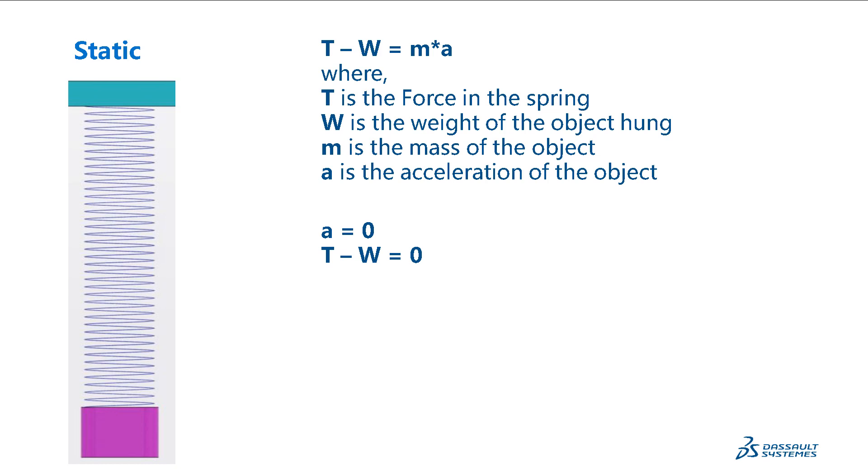When there is no more motion, the acceleration of the object will be zero, and at this point in time, T minus W will be equal to zero. We say that the system is at equilibrium, or that the system is static. When we perform a static procedure, we are evaluating the system with a set of applied loads at its equilibrium point.